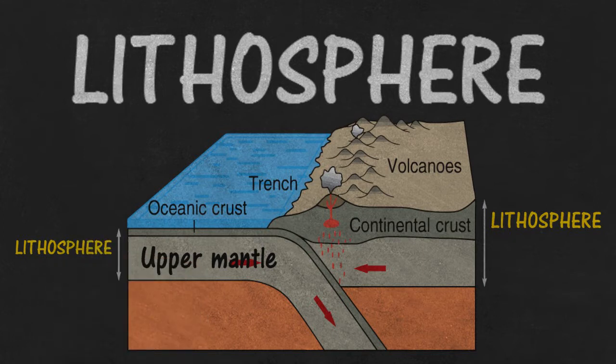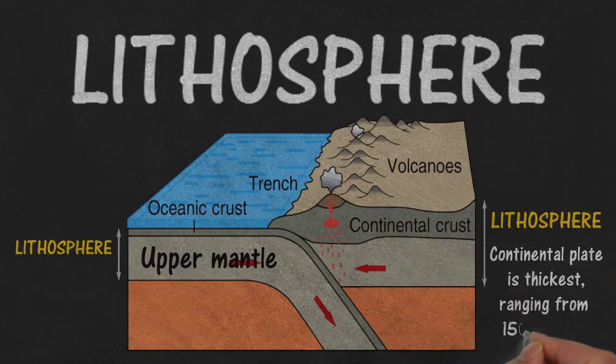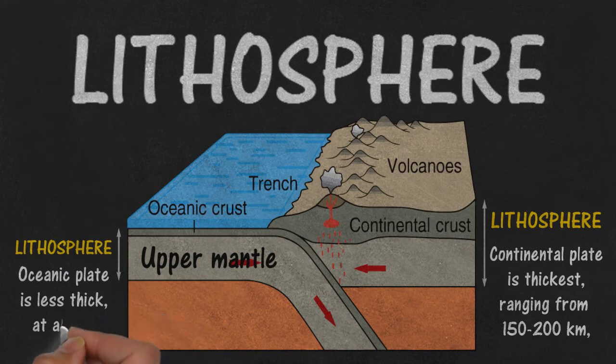The thickness of the lithosphere gives you a good perspective on how massive it is. Continental lithosphere, or plate, is thickest, ranging from 150 to 200 kilometers, while oceanic plate is less thick, about 80 to 100 kilometers.